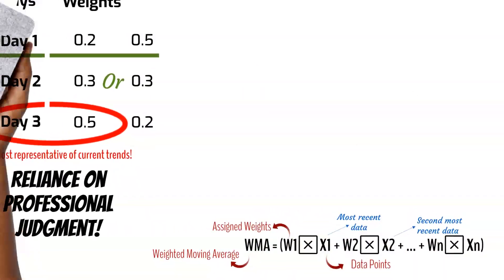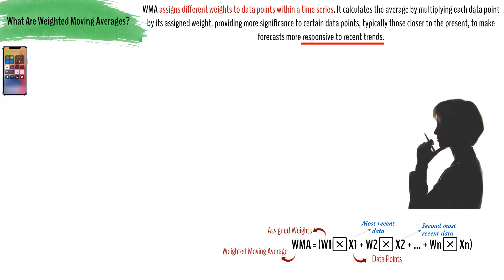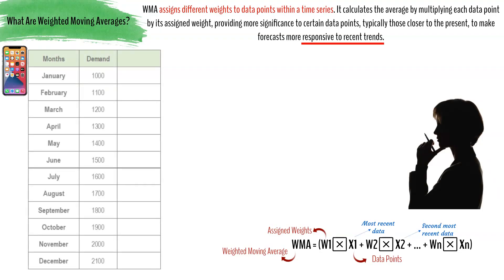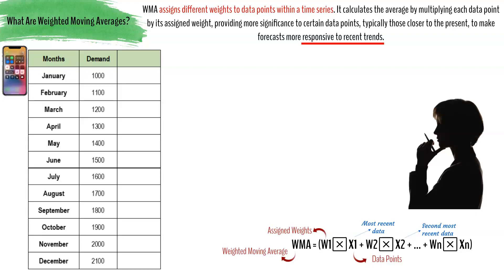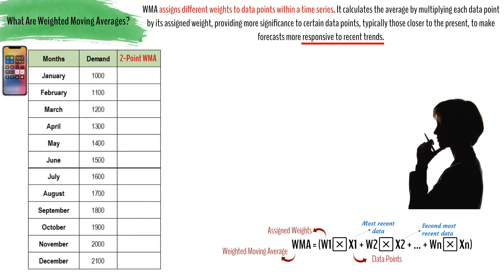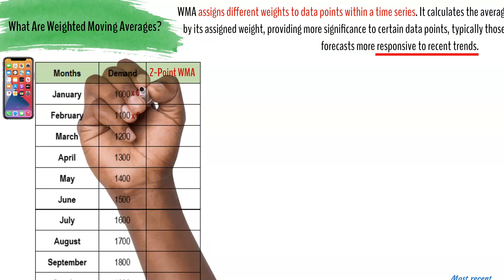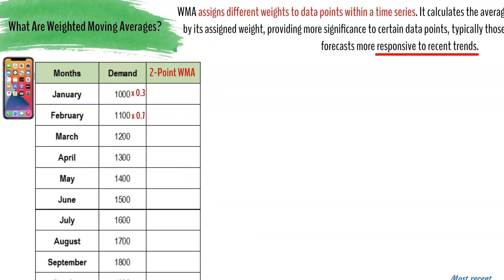To understand this better, let us consider an example. A company that produces smartphones is experiencing a seasonal increase in demand for its products. The operations manager needs to forecast demand for the next three months to ensure sufficient inventory without overstocking. He has collected time series data in months as shown in the table. The operations manager decides to use a two-point weighted moving average, assigning a weight of 0.7 to the most recent demand and 0.3 to the previous month's demand.